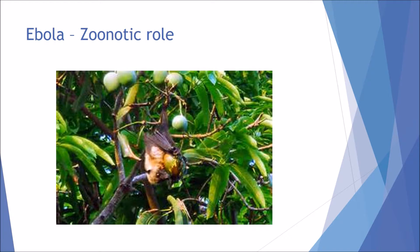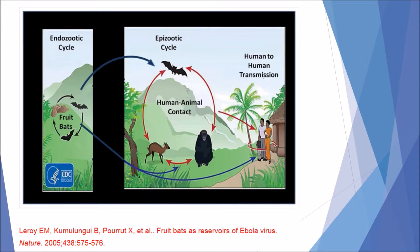Now let's discuss the zoonotic role of Ebola. It is not a naturally occurring human pathogen — human pathogenesis is an accidental process. It acts as a natural reservoir within fruit bats. In the endozootic cycle — how it's transmitted from bat to bat — imagine a fruit bat eating a mango. There are plenty of mango trees throughout West Africa. While eating, the bats leave saliva on the mangoes and urinate and defecate nearby. Other bats in close proximity can take up the saliva or accidentally ingest faeces and urine, causing them to become infected in an endless cycle.